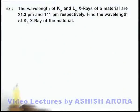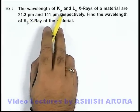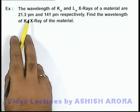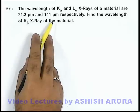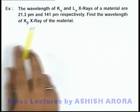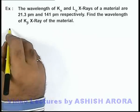In this example, we are given that the wavelength of K-alpha and L-alpha X-rays of a material are 21.3 picometer and 141 picometer respectively, and we are required to find the wavelength of K-beta X-ray for the same material.